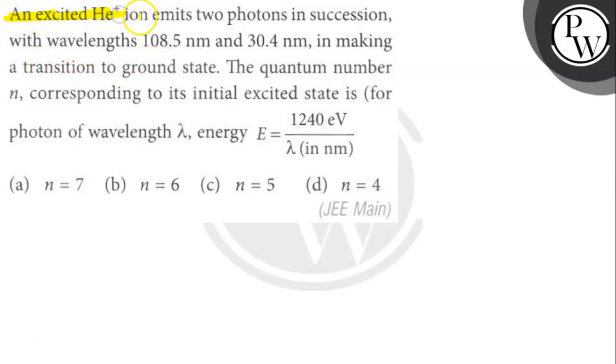An excited helium ion emits two photons in succession with wavelengths 108.5 nanometer and 30.4 nanometer in making a transition to ground state. The quantum number n corresponding to its initial excited state is what?